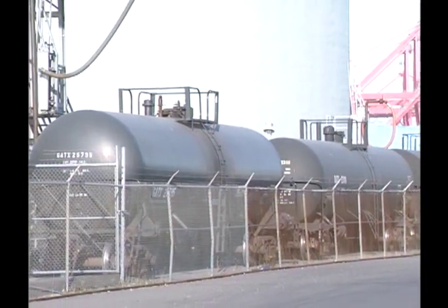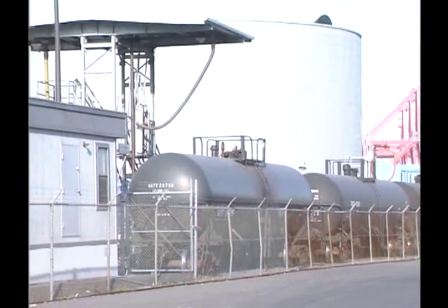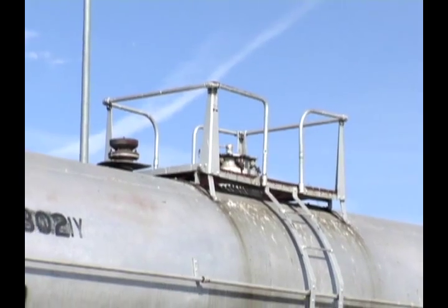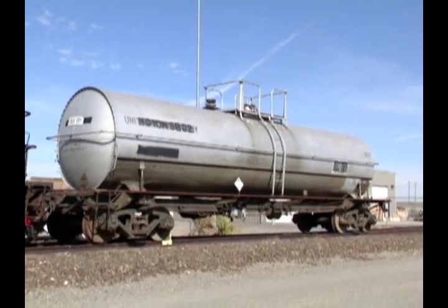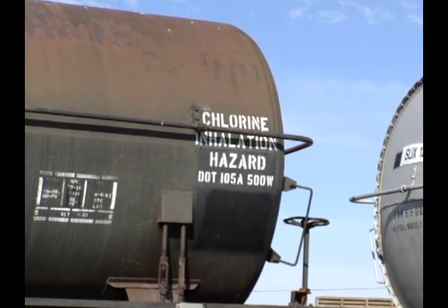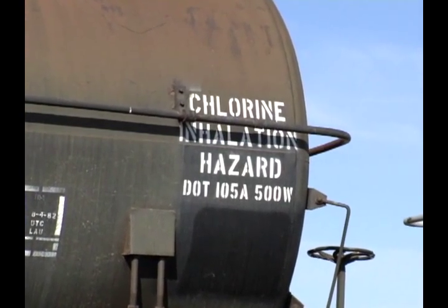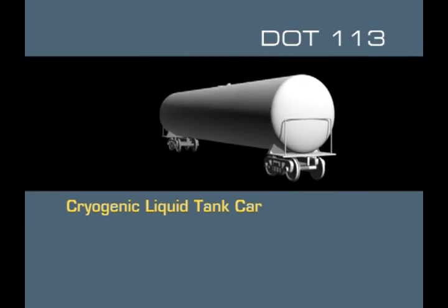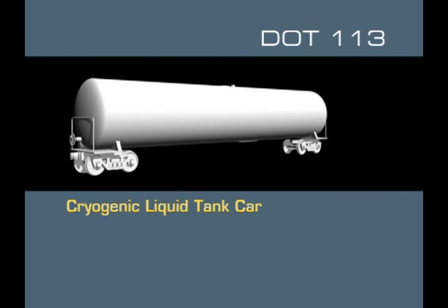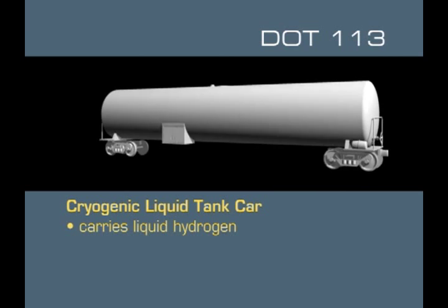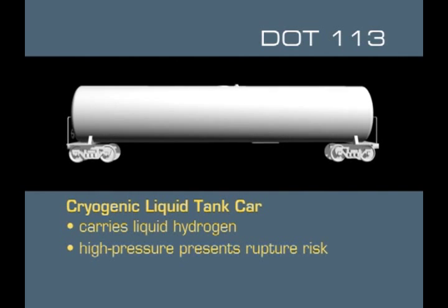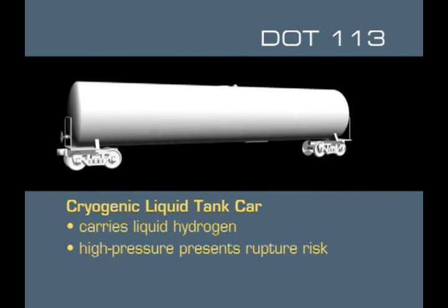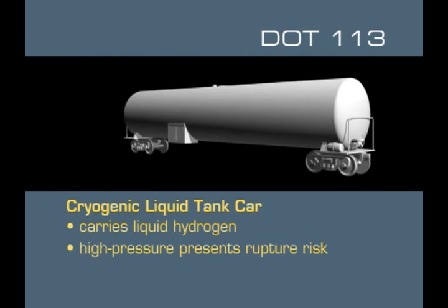The first general category of containers you need to recognize are those used in rail transportation. The Department of Transportation is the authorizing agency for rail cars; the acronym DOT followed by a designation number is used to signal first responders of the chemicals on scene. The first type of rail car is the cryogenic liquid tank car or DOT-113, which carries liquid hydrogen and has the silhouette of a thermos bottle on rails. It is a high-pressure tank car and presents a rupture risk in certain situations.